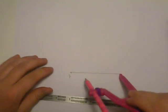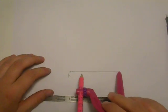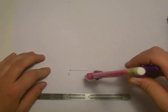To create a perpendicular bisector, we need to put our point on B and make sure it's more than halfway. I'm going to draw an arc.